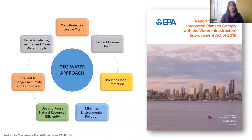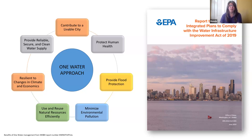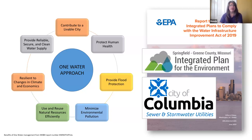The one water approach is really just integrated design and management of all of our water needs in a community. It strives to contribute to a livable city, protect human health, provide flood protection, minimize environmental pollution, use and reuse natural resources efficiently, and be resilient to changes in climate and economies — all to provide reliable, secure, clean water. The EPA presented a report to Congress on integrated plans to comply with the Water Infrastructure Improvement Act of 2019. Of the 13 communities profiled, two are from Missouri: the City of Columbia and the Springfield-Greene County Partnership's Integrated Plan for the Environment, which was the first in the nation submitted to EPA for integrated water planning.